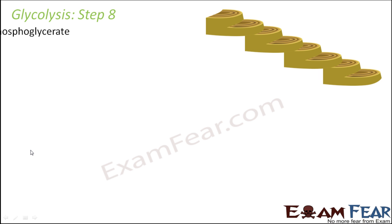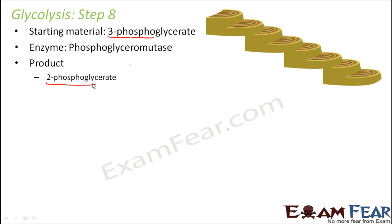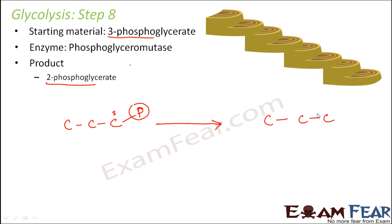In step 8, the starting material is 3-phosphoglycerate from step 7, and the enzyme is phosphoglycerate mutase. The product formed is 2-phosphoglycerate. Looking at the starting material and product, this enzyme is simply relocating the phosphate group from the third carbon to the second carbon — that is all it does.